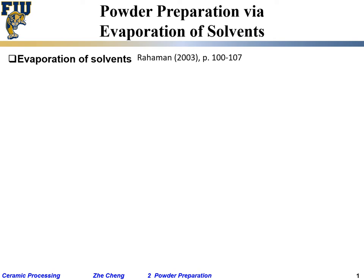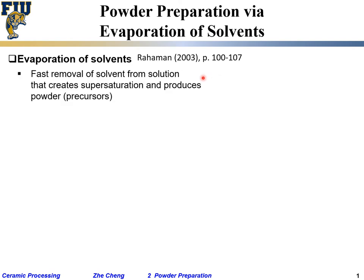Another type of reaction is called powder preparation by evaporation of solvents, sometimes involving some chemical reaction to get rid of solvent. Quite often we need the so-called fast removal of solvent from a uniform solution that creates supersaturation and produces powder or precursor. One method is called spray drying.